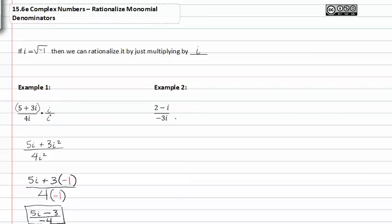In example two we have a similar situation. We have an i in the denominator which means the same as having a radical in the denominator. And so we have to rationalize the denominator by multiplying the numerator and denominator by i.